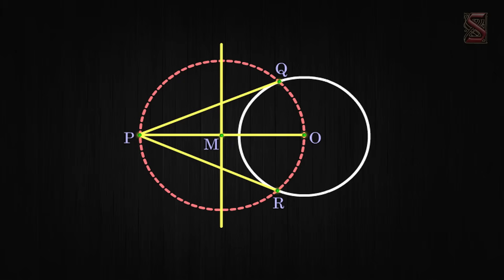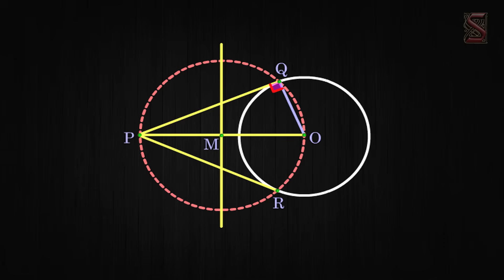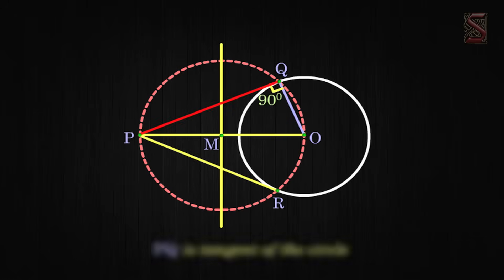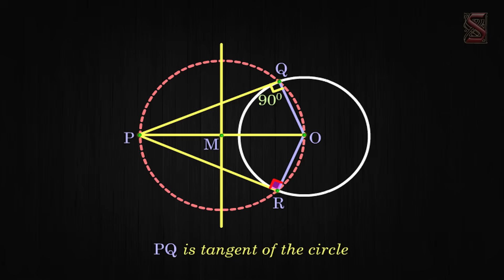Now let us prove PQ and PR are tangents to the circle. Join OQ. The angle PQO is the angle in a semicircle, so its measure is 90 degrees. Therefore PQ is perpendicular to OQ. Since OQ is the radius of the given circle, PQ is a tangent.